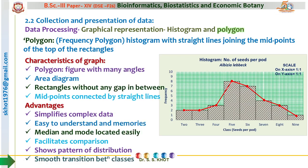The polygon is drawn with a many-angled line — the midpoint of each successive class at its maximum frequency is connected by a straight line, producing an angular figure with many angles, hence the name polygon. This is also an area diagram, closing at zero frequency on both ends. The midpoints are connected by straight lines over rectangles plotted without any gap, simplifying the complex data. The advantages are similar to those of histogram, with the addition of a smooth transition between classes.